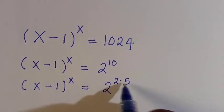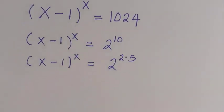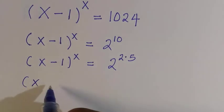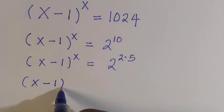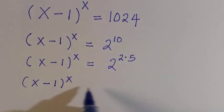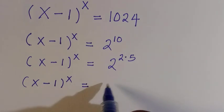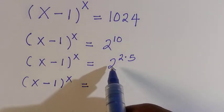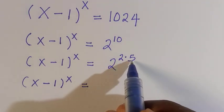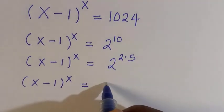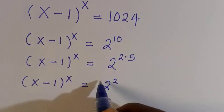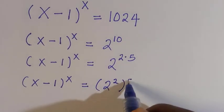Next we have (x-1)^x equals, for this 2 to the power of 2 multiplied by 5, we consider it as 2 raised to power 2 raised to power of 5.